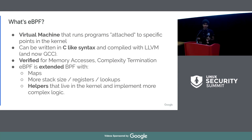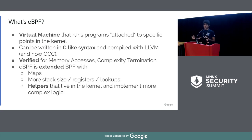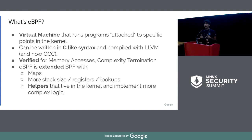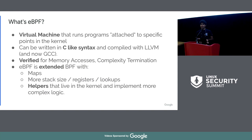We want to use eBPF. It's essentially a virtual machine that lives in the kernel. You can attach these programs to specific points. They are written in a C-like syntax. It's not Turing-complete, so it can be verified. eBPF is extended BPF — it has maps, more stack size, more registers, more complicated lookups, and these things called helpers, which have more complicated logic that lives within the Linux kernel. This is essentially what we want to use to build those detection helpers and use them in the LSM — to extend the LSM using eBPF.